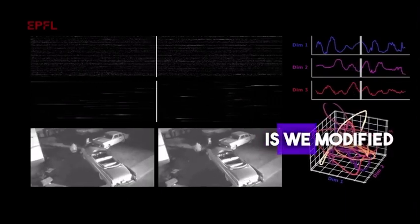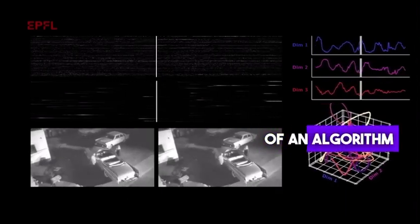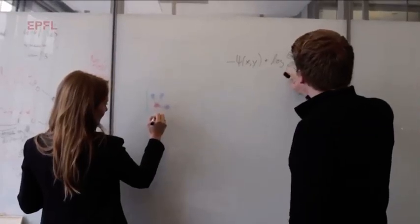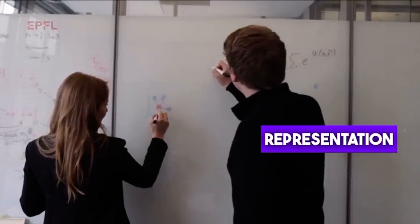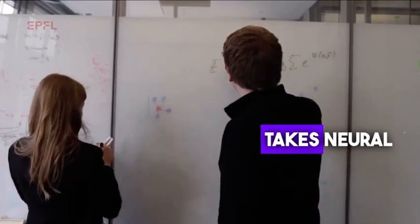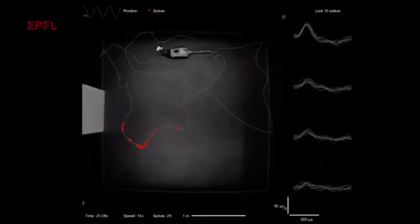Concretely, we modified the loss function of an algorithm called contrastive learning. This now allows us to sample from both discrete and continuous data streams to build a representation space. Zebra jointly learns this representational embedding space from both the neural data and the behavioral data of the animal.